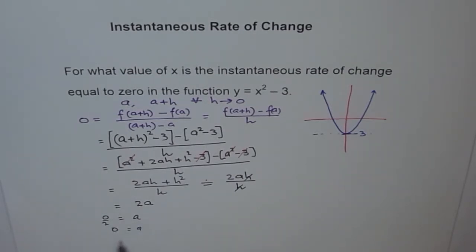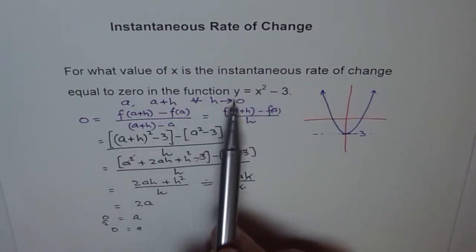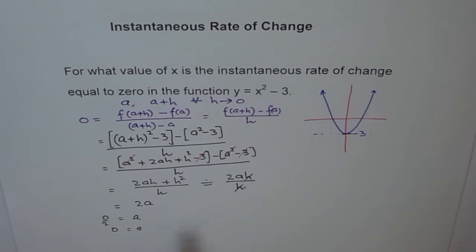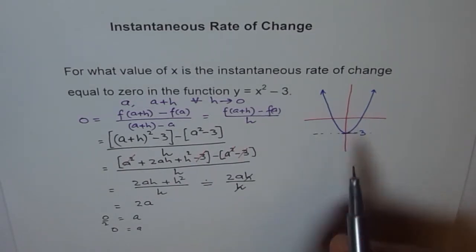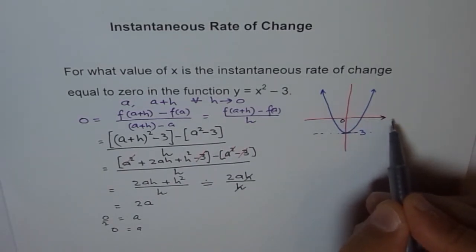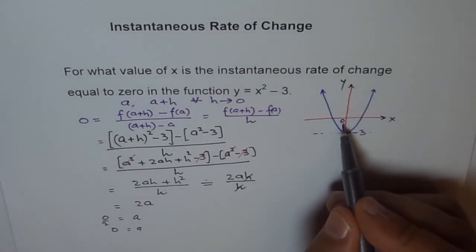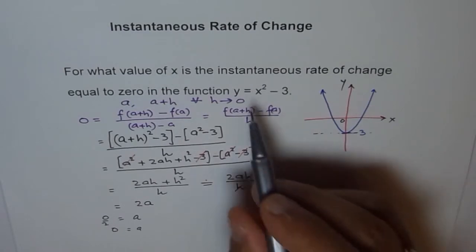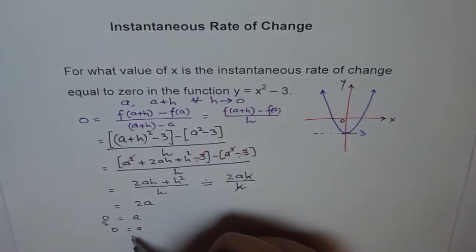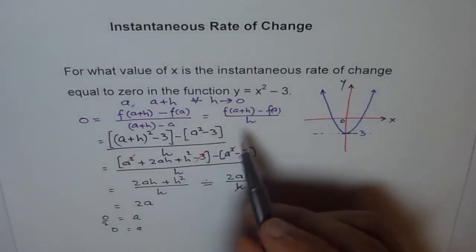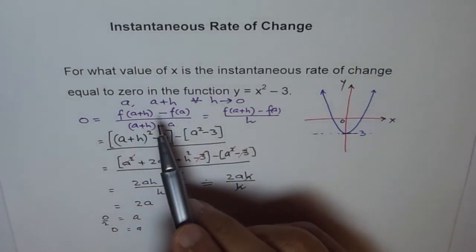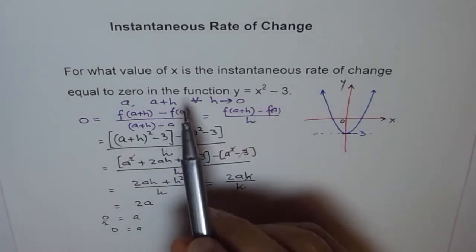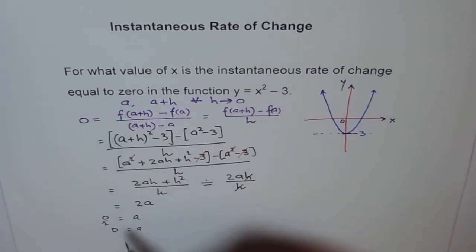So that means at point A equals to 0, we have instantaneous rate of change as 0. Do you understand? And that's what we expected. This is the x-axis. And that's the y-axis. So at A, so the point is, the A point, the x value is A and A should be 0. That's what we concluded here.